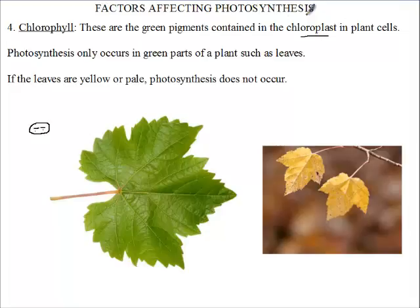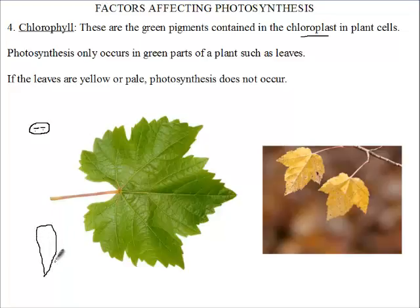Photosynthesis only occurs in green parts of a plant, such as the leaves. Now there are certain plants that do not have leaves — for example, the cactus. With a cactus, it has no leaves, but it has a very thick stem.